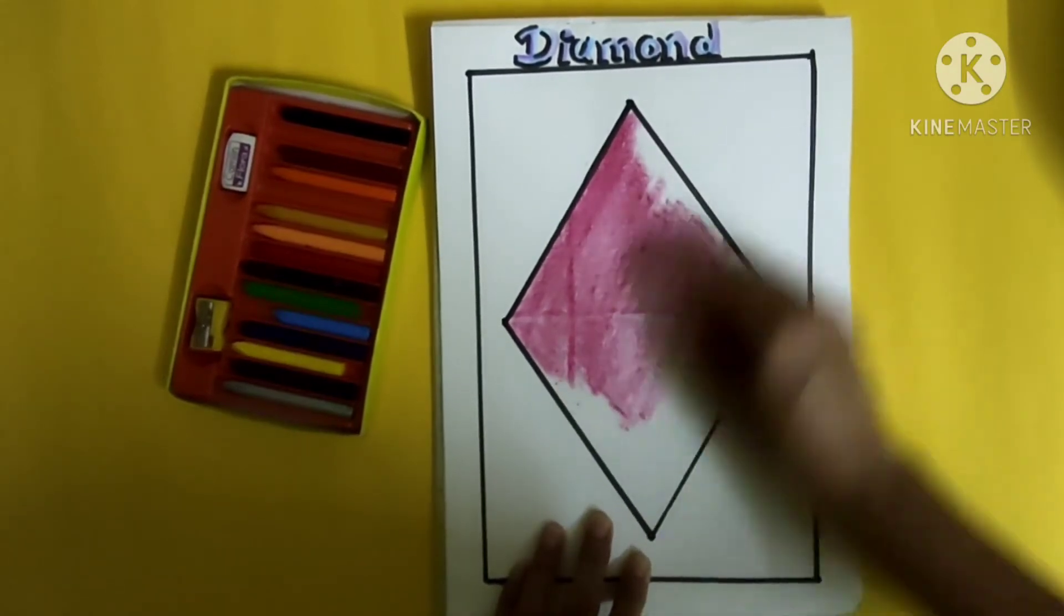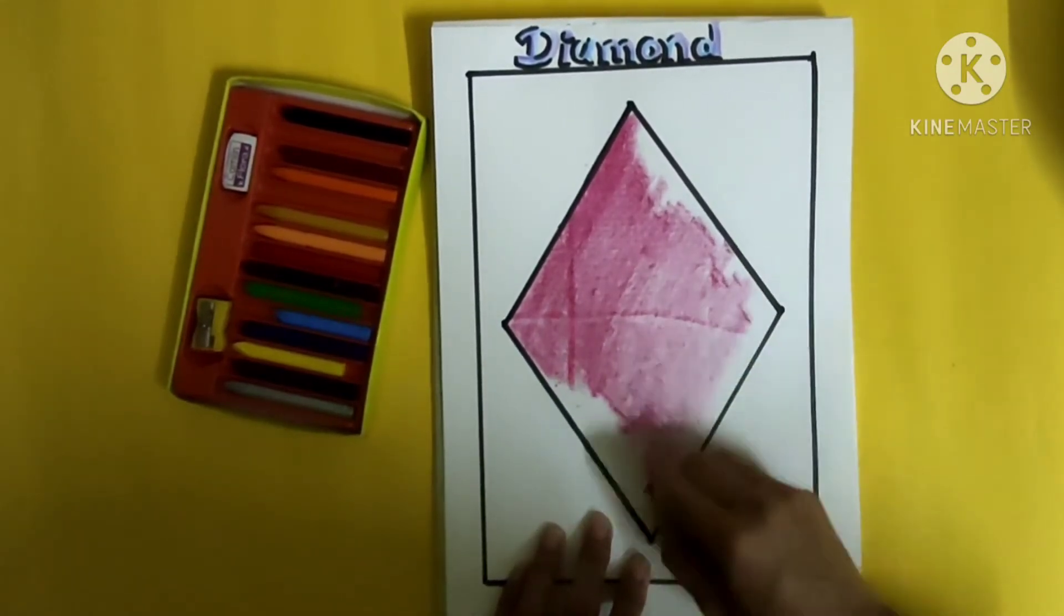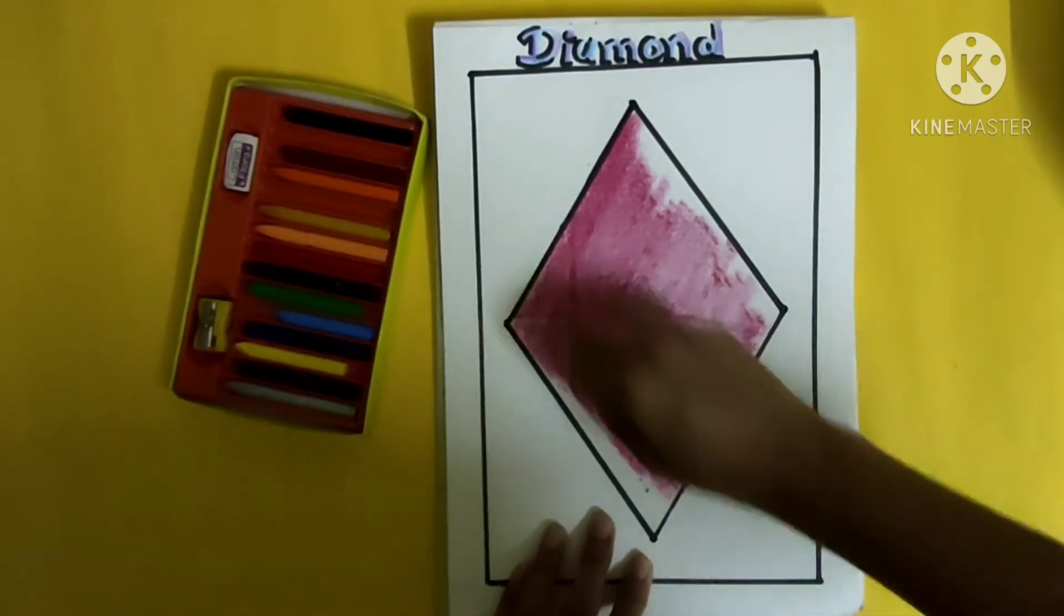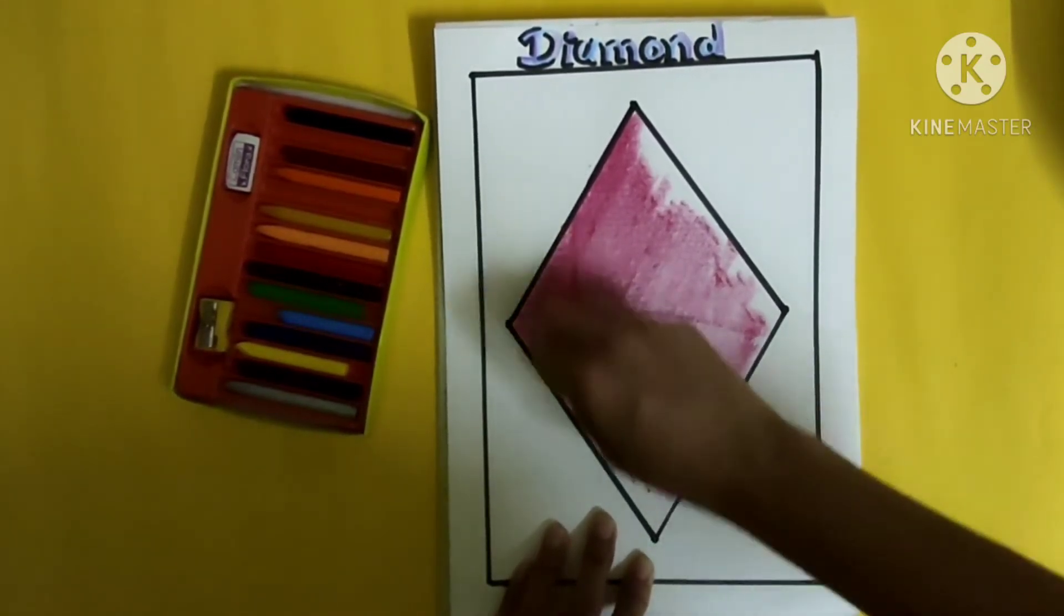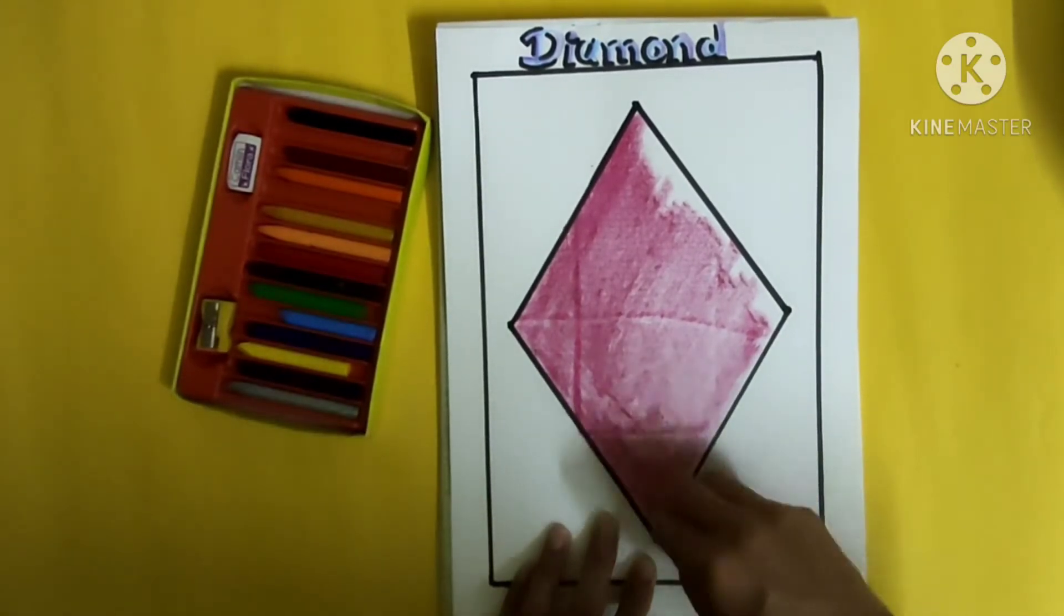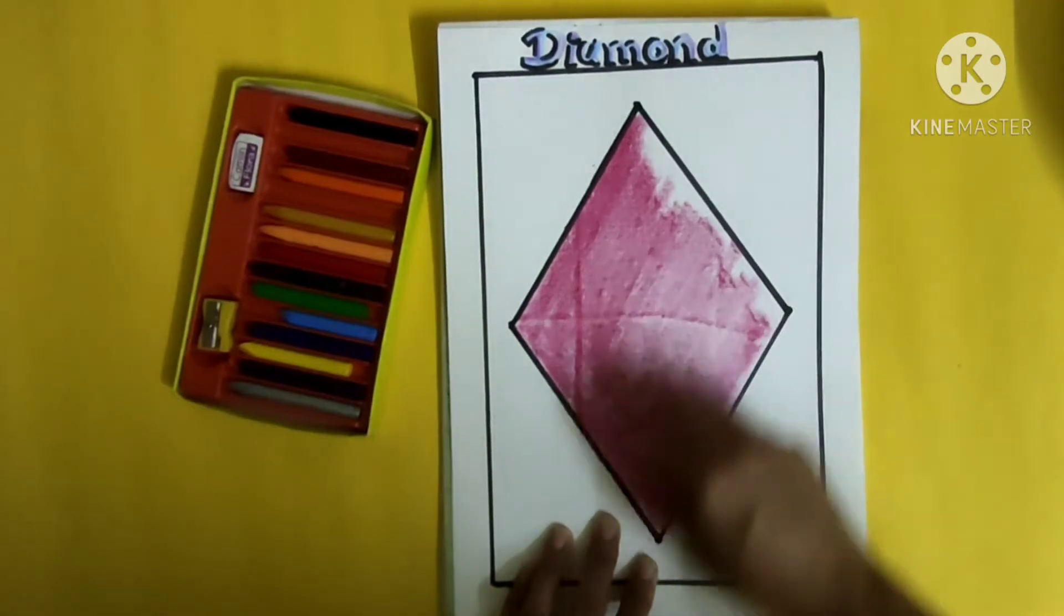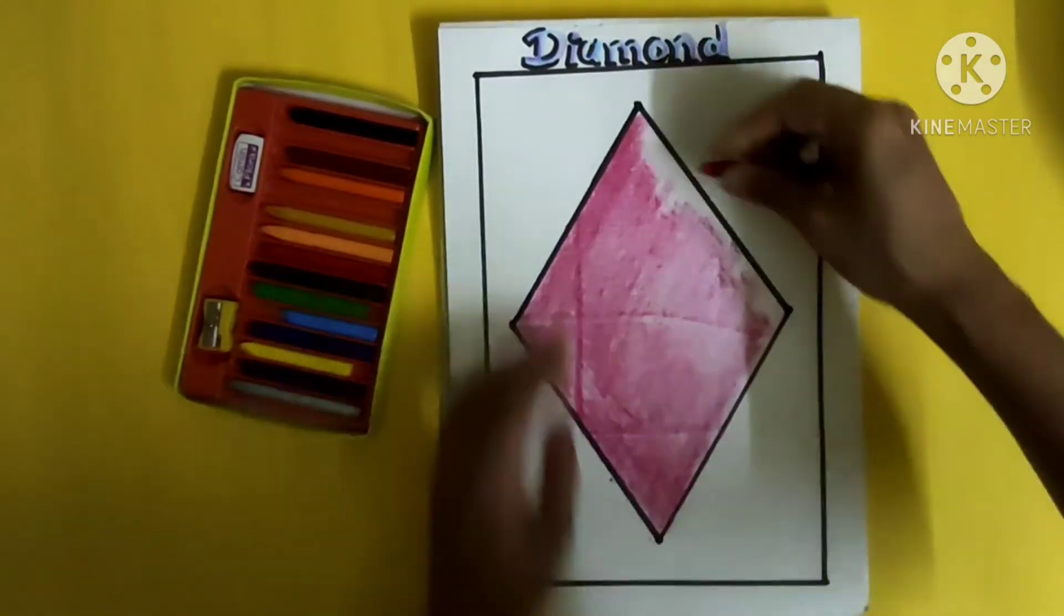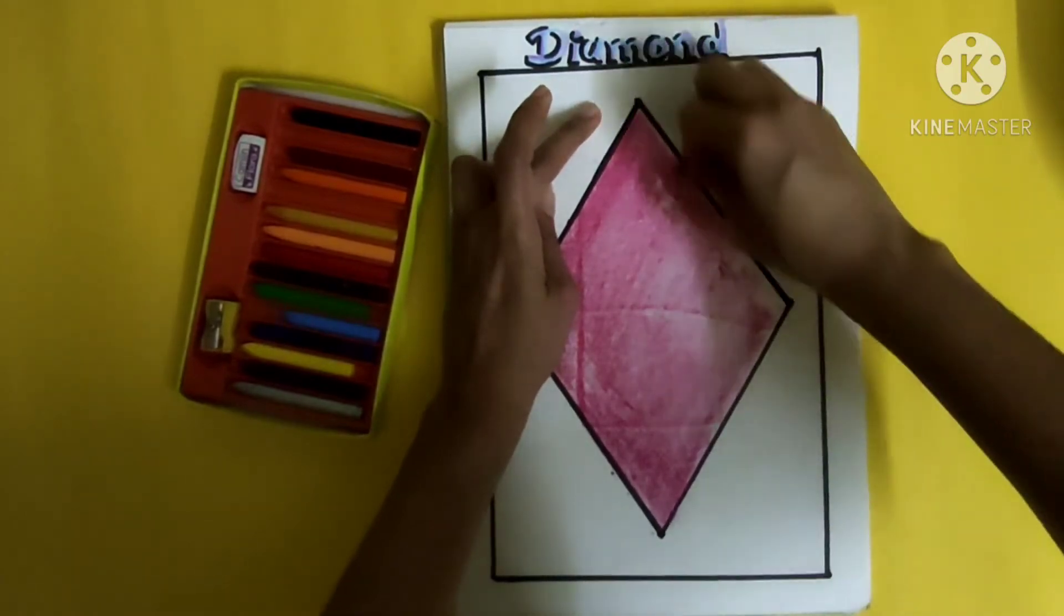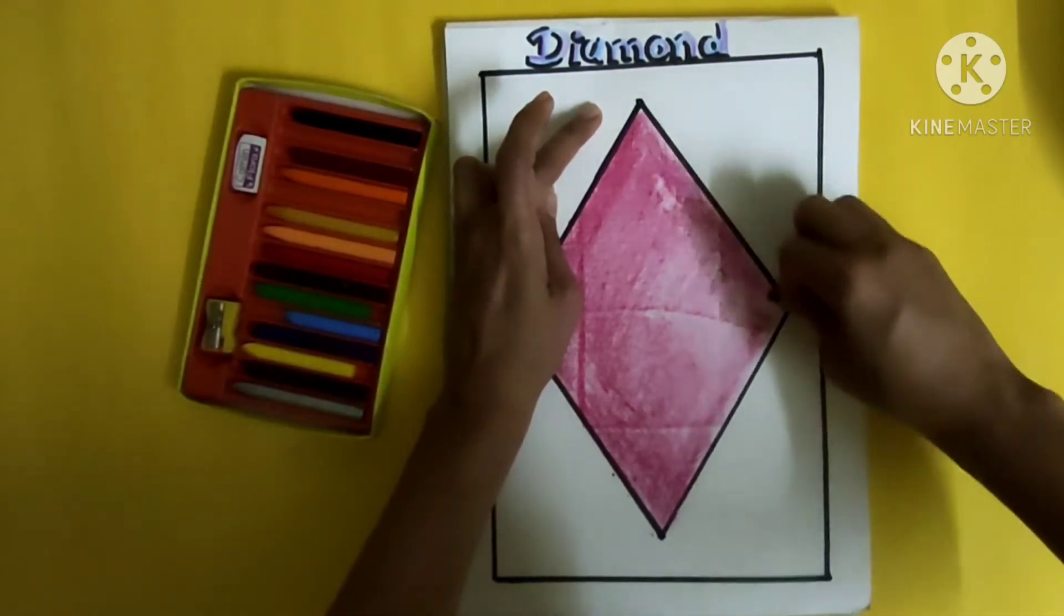Think about things that are in the diamond shape. You will see around your house, which things are diamond shaped. Hmm, kite! You know a kite? Yes, kites are also in a diamond shape.